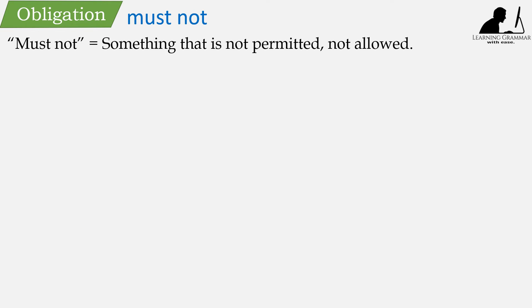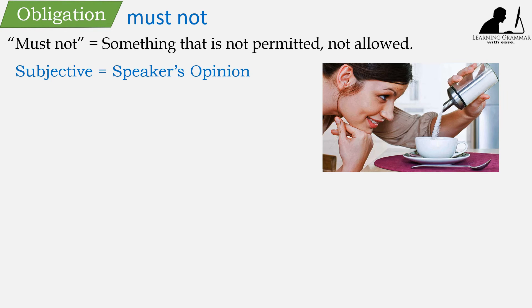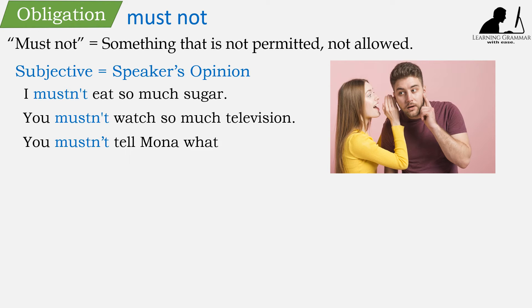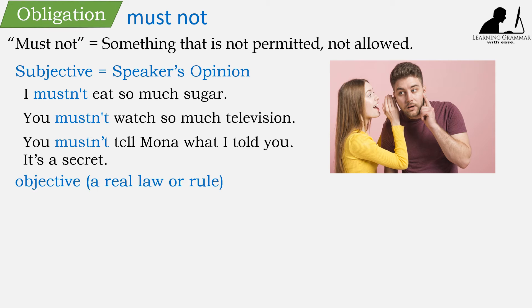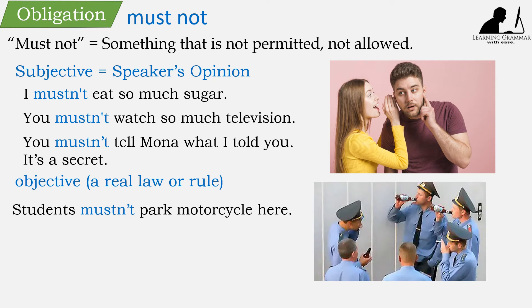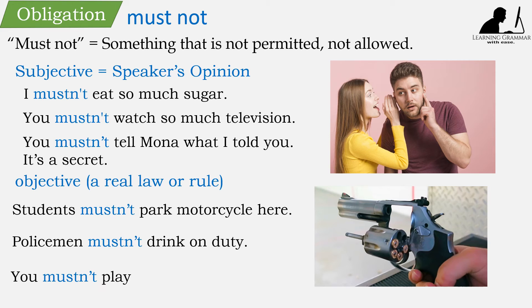'Must not' means something is not permitted, not allowed. It can be subjective — the speaker's opinion — for example: I mustn't eat so much sugar. You mustn't watch so much television. You mustn't tell Mona what I told you — it's a secret. Or objective — a real law or rule — for example: Students mustn't park motorcycles here. Policemen mustn't drink on duty. You mustn't play with guns.